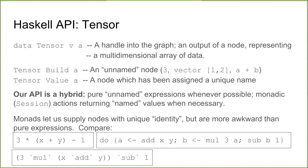The monad lets us plumb through unique identifiers and assign things. It's more powerful but more awkward than pure expressions. Compare writing `3 * x + y - 1` as a pure expression versus using monadic actions with temporary variables — the pure version is much easier to read. There are combinators like `liftA` and applicative-style operators which are a little better, but still not as clean as pure expressions.